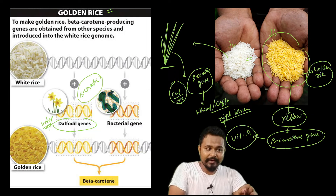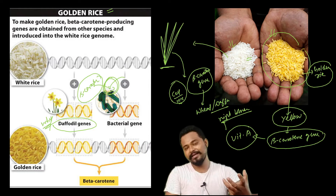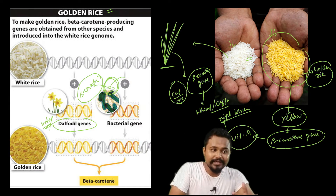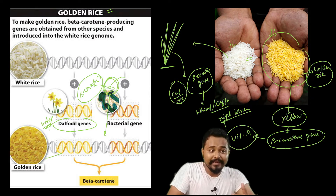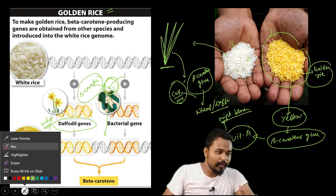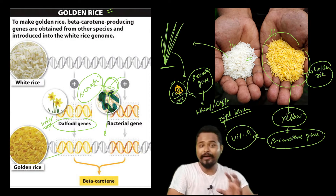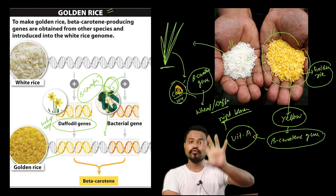This beta-carotene gene is isolated from different bacterial cells. This is used to coat normal rice cells. A recombinant gene — the beta-carotene gene — is then introduced into the normal rice plant.